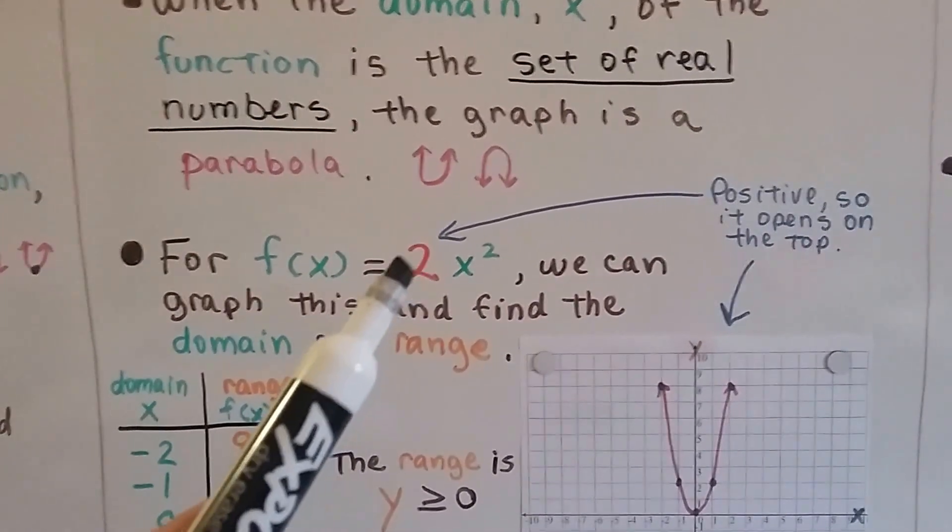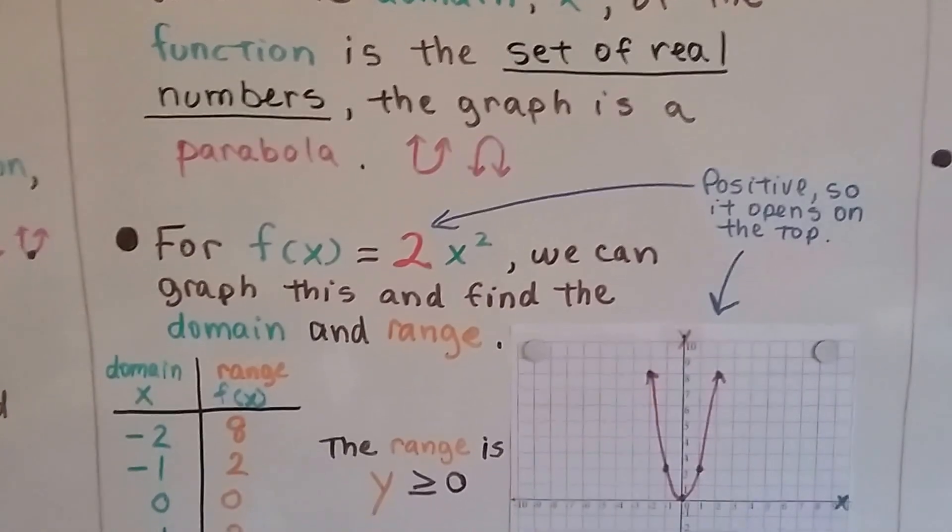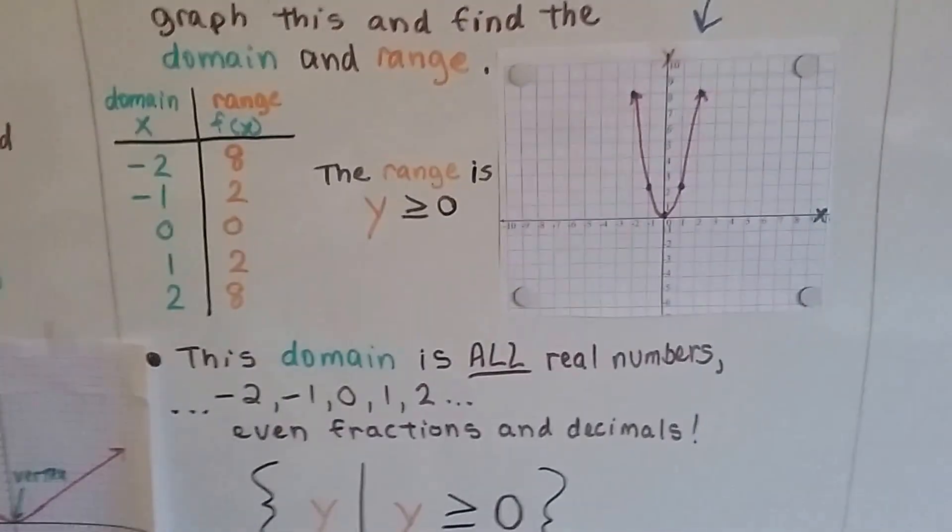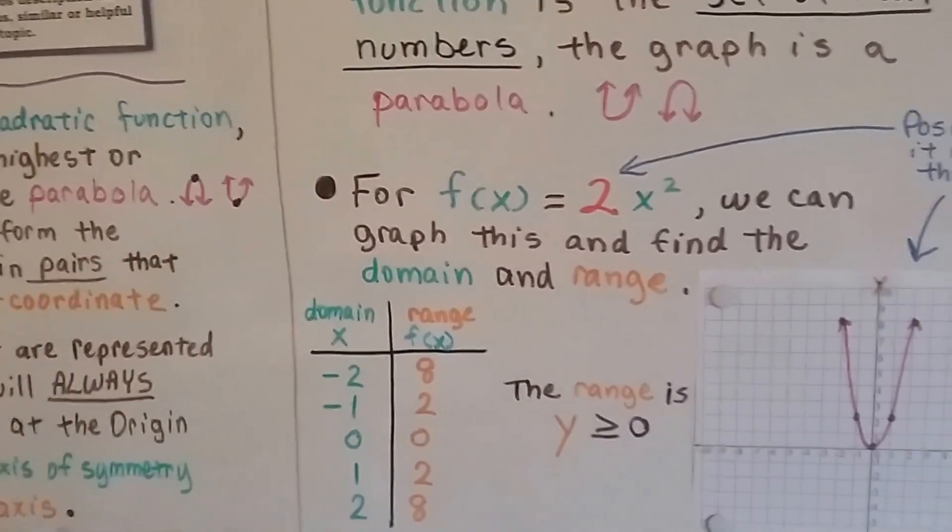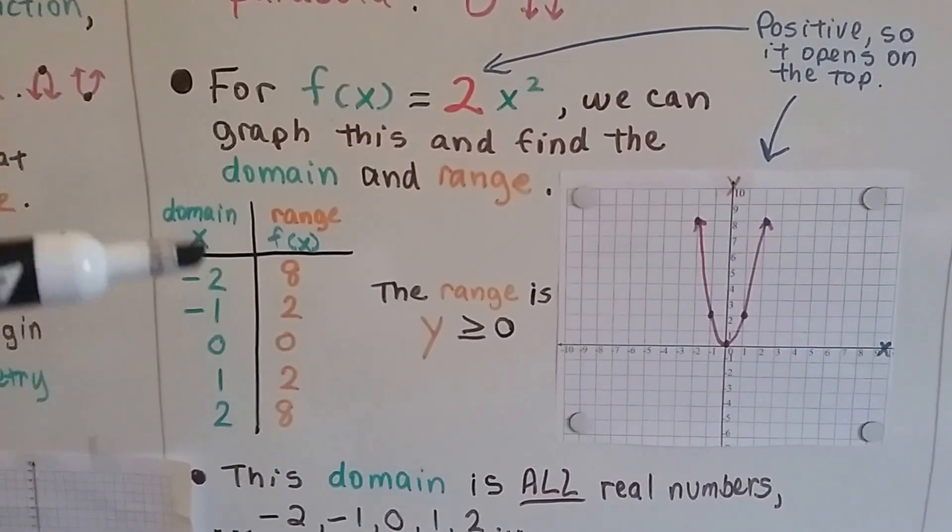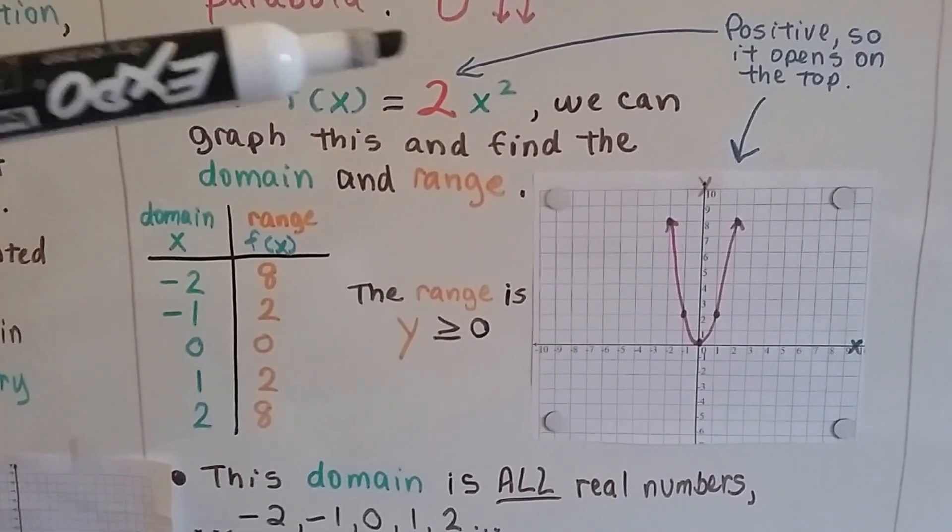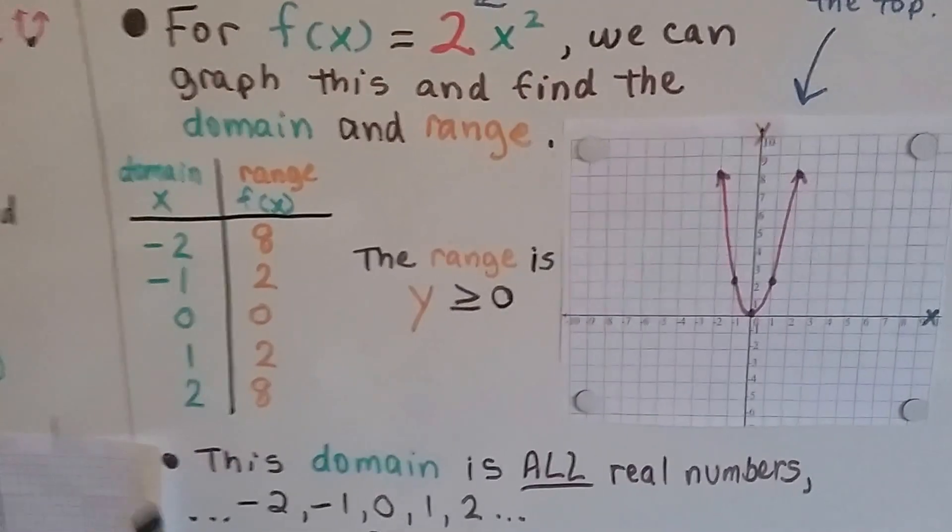Now, if you notice, this 2 is a positive 2, so that's going to tell us that our parabola is going to open at the top, all right? If it was a negative 2, it would be upside down, and it would be like this, and it would open downward, see? So, we can fill in a Table of Values that will satisfy this 2x squared, all right?